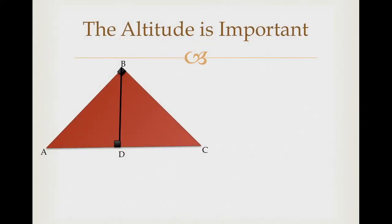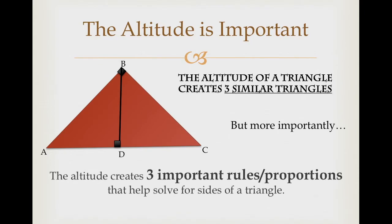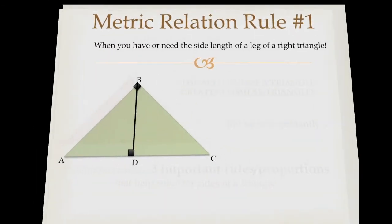So why is the altitude so important? Remember, the altitude creates three similar triangles, but more importantly it also creates three rules that let you solve for every single side of the triangle, depending on what you're given. That's why it's very important that you label your legs, your hypotenuse, and your altitude. Triangles — rule of three — so I'm going to give you three important rules and proportions.